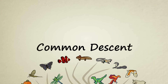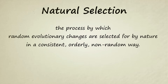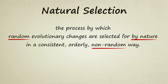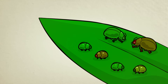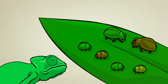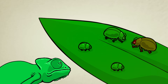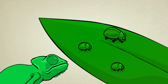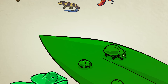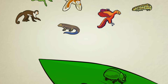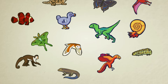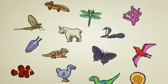Natural selection is the process by which random evolutionary changes are selected for by nature in a consistent, orderly, non-random way. Through the process of descent with modification, new traits are randomly produced. Nature then carefully decides which of those new traits to keep. Positive changes add up over multiple generations. Negative traits are quickly discarded. Through this simple, ongoing process, nature, even though it does not have a thinking mind, is capable of producing incredibly complex and beautiful creations.